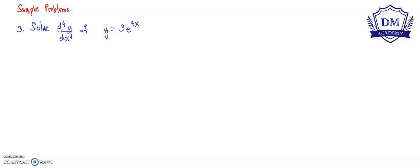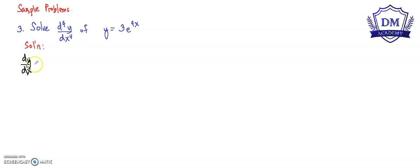Welcome back to DM Academy. Let's have another problem for the higher order differentiation. Let us solve the fourth derivative of the given function y is equal to 3e raised to 4x. This is an exponential function. The first derivative is denoted by dy over dx, and this is equal to the d over dx of the given function 3e raised to 4x.